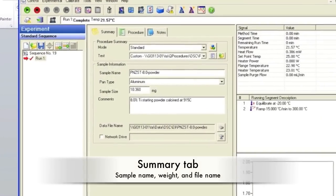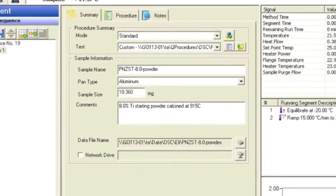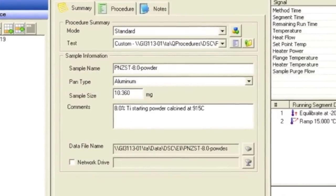In the Summary tab, make sure the mode is set on Standard and the test is set as Custom. The pan should be aluminum. Then specify the sample name, weight, and choose the file name and location.